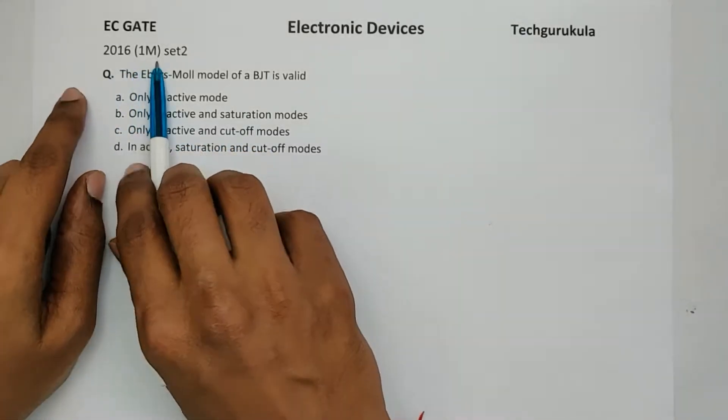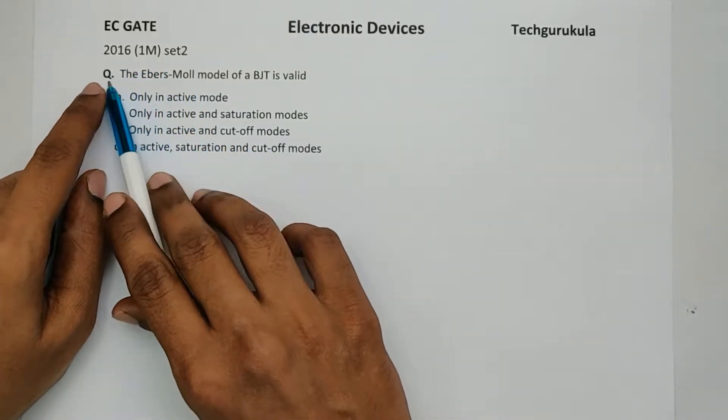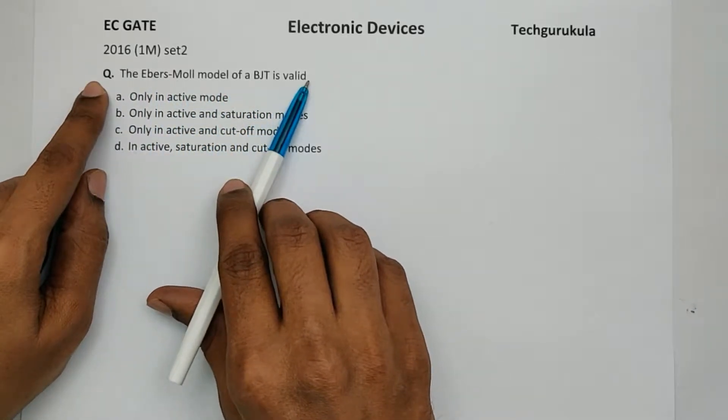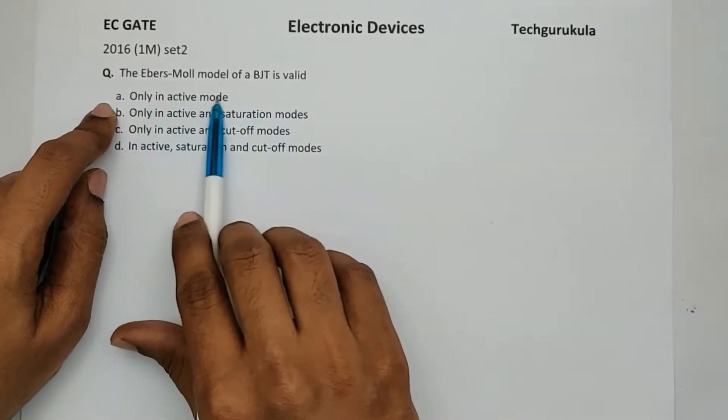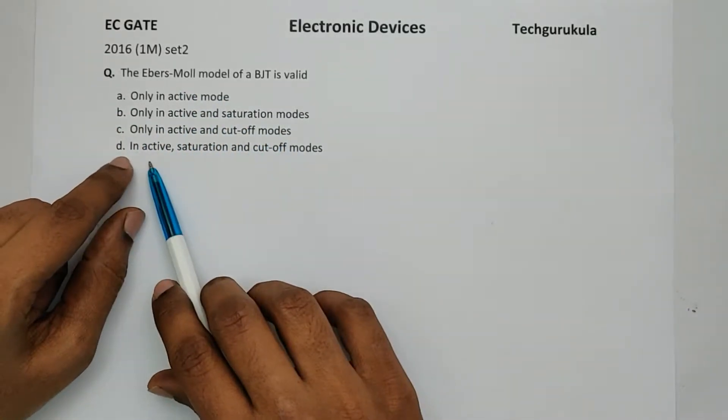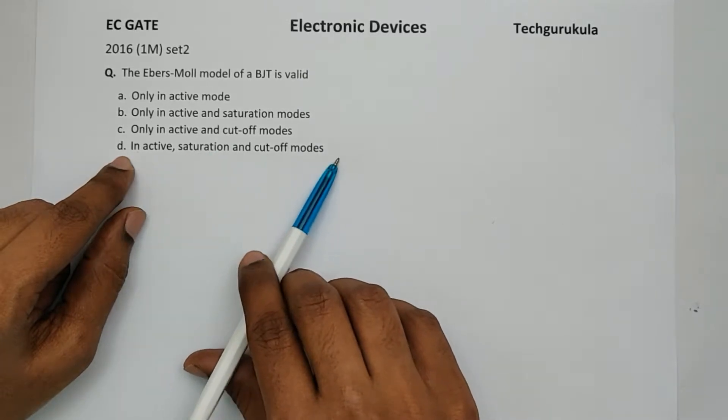This question came in 2016 for one mark. The question is, the Ebers-Moll model of a BJT is valid only in active mode, only in active and saturation modes, only in active and cutoff modes, and option D is in active, saturation, and cutoff mode.